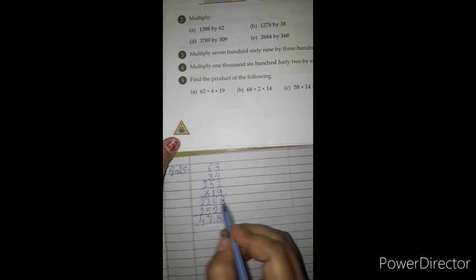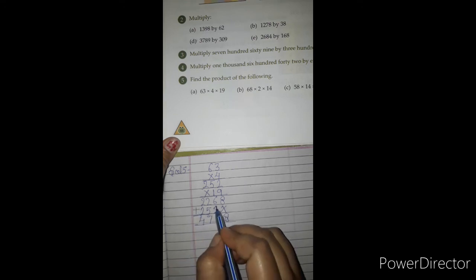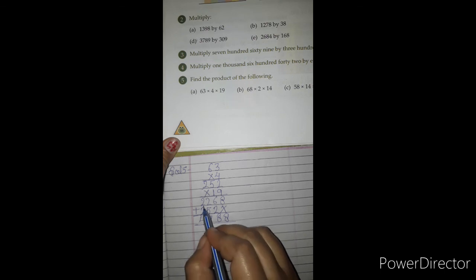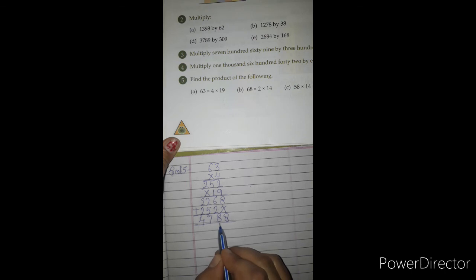Now, we add it. 8, 6, and 2 is 8. 2 and 5 is 7. 2 and 2 is 4. So, our answer is 4,788.